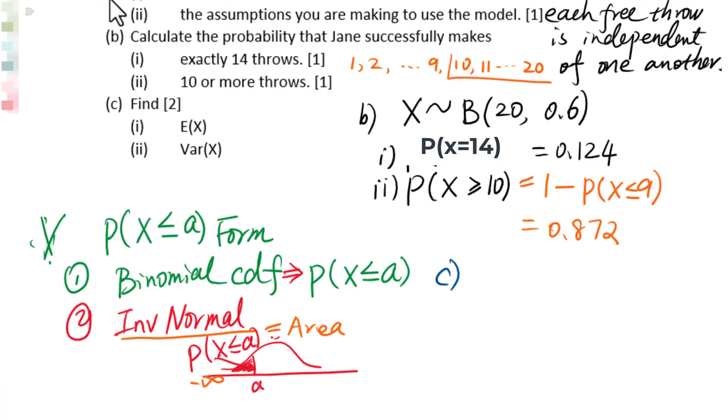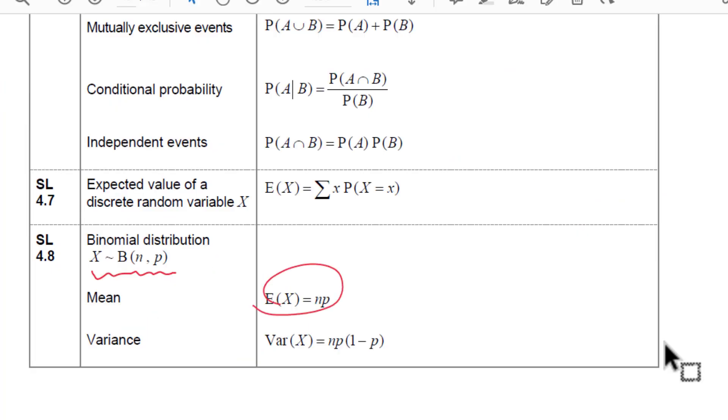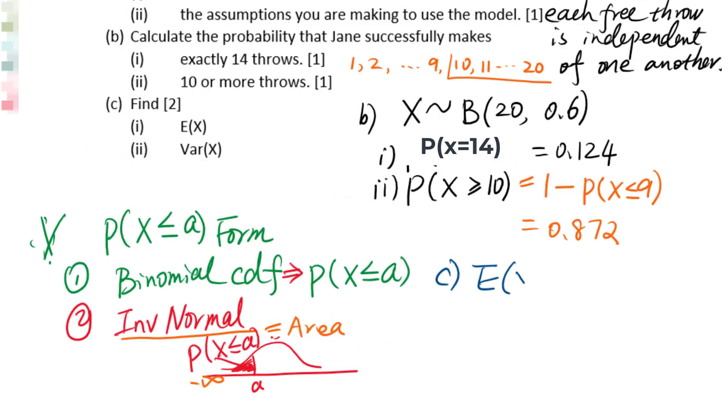Let's go to C. E of X means expected value. From this formula, E of X equals N times P. Variance of X equals N times P times 1 minus P. So E of X equals 20 times 0.6 equals 12.